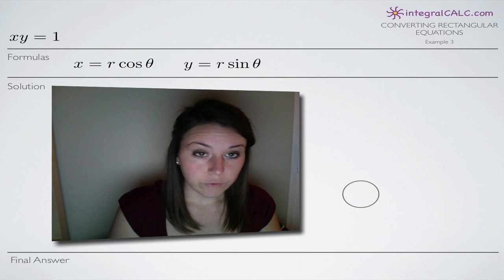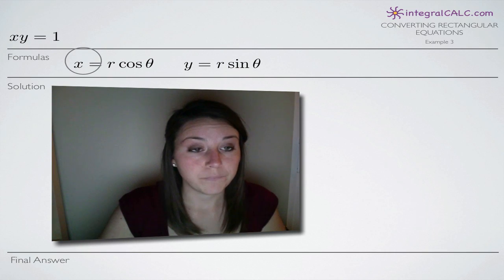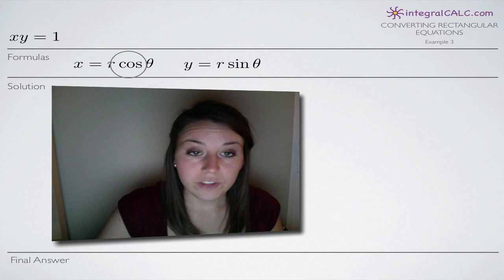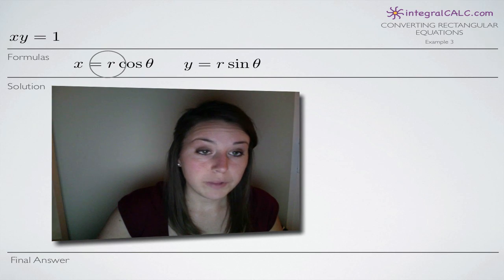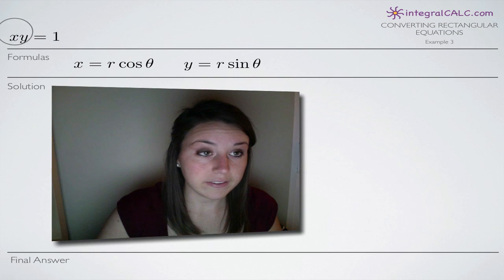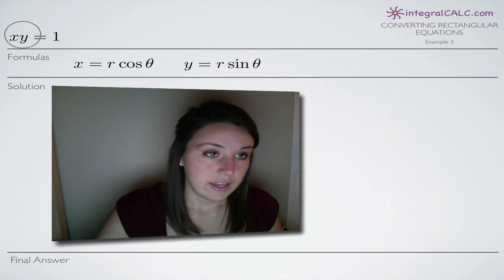The two formulas that we're going to use to convert our rectangular equation to a polar equation are x equals r cosine of theta and y equals r sine of theta. What we'll do is plug in r cosine of theta for x and r sine of theta for y.